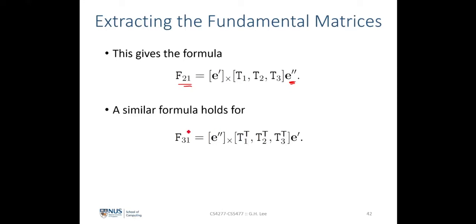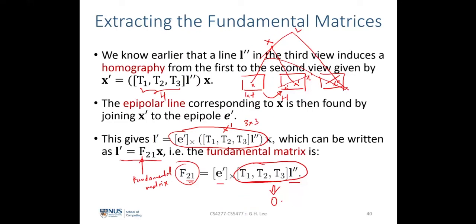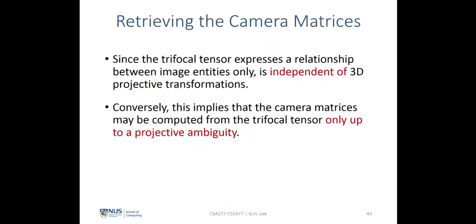A similar formulation can be derived between the third and first views, giving fundamental matrix F31. Here the roles of e and e'' are swapped, and the trifocal tensor takes a transpose. I'll leave this derivation to you — it follows the same steps as the derivation for F21.